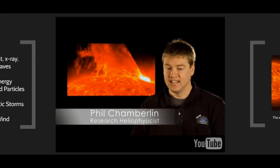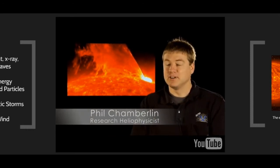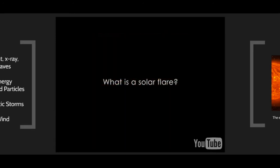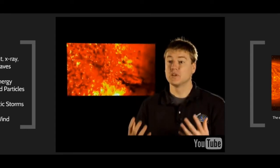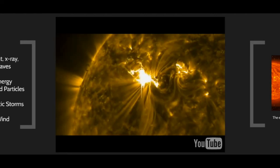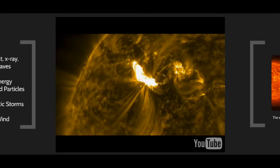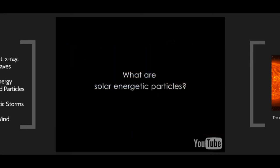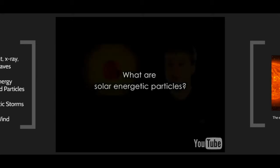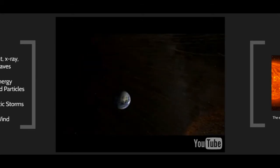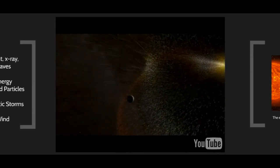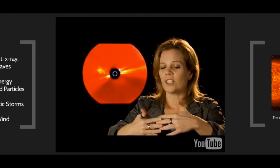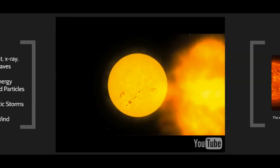A coronal mass ejection, or CME, is an eruption of plasma from the Sun that shoots out into space and can affect us here at Earth. A solar flare is a huge release of energy that converts magnetic energy into heat and light, accelerating particles and heating plasma to over 60 million Kelvin within minutes. Solar energetic particles can be accelerated up to almost 80% of the speed of light, and a fast-moving CME can create a shock wave that also generates solar energetic particles.